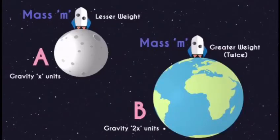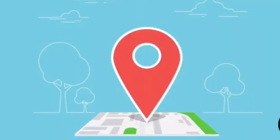If you are still confused between weight and mass, here's an example. A rocket is on the moon with mass m and gravity x. But when the rocket is on earth, its mass is still m but the gravity is 2x. From this, we can conclude that the mass remains constant everywhere, whereas for its weight, it depends on the gravitational force of that certain place.